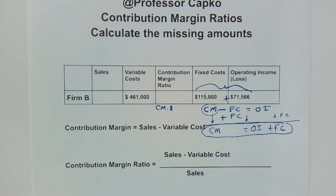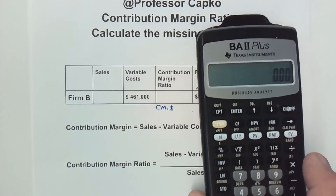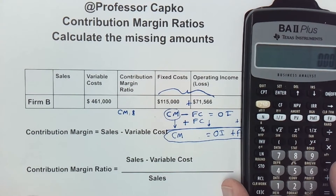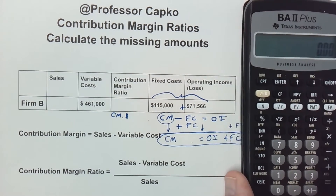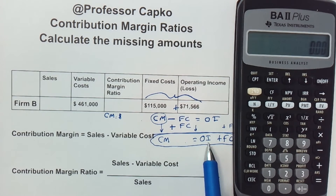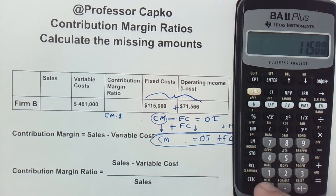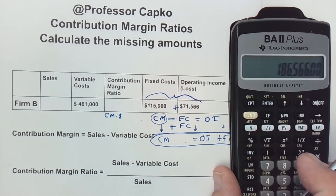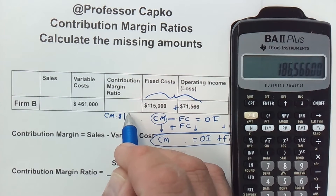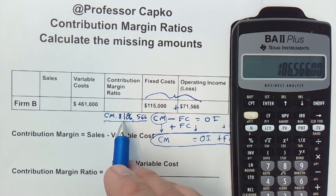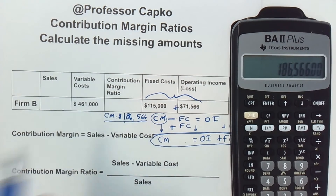Let's do that calculation. I'm going to use my BA2 Plus calculator — it's great for finance and accounting; if you're looking for one there's a link down below and there's also one on screen you can use. So operating income is $71,566 and I add to that the fixed costs of $115,000, and that gives us a contribution margin of $186,566. That's our contribution margin as a dollar figure, and we're going to use it to find our sales figure.